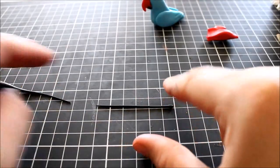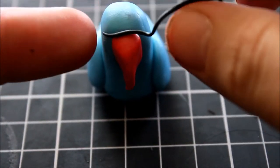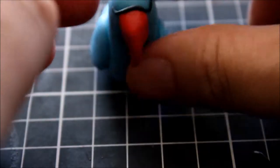To create the detail on the bird's face, I'm rolling out a very thin snake of black. This will be the line that comes from their eye, runs across the top of their beak, and meets up with their other eye. Make sure you press that black clay into the blue clay so that it sticks.